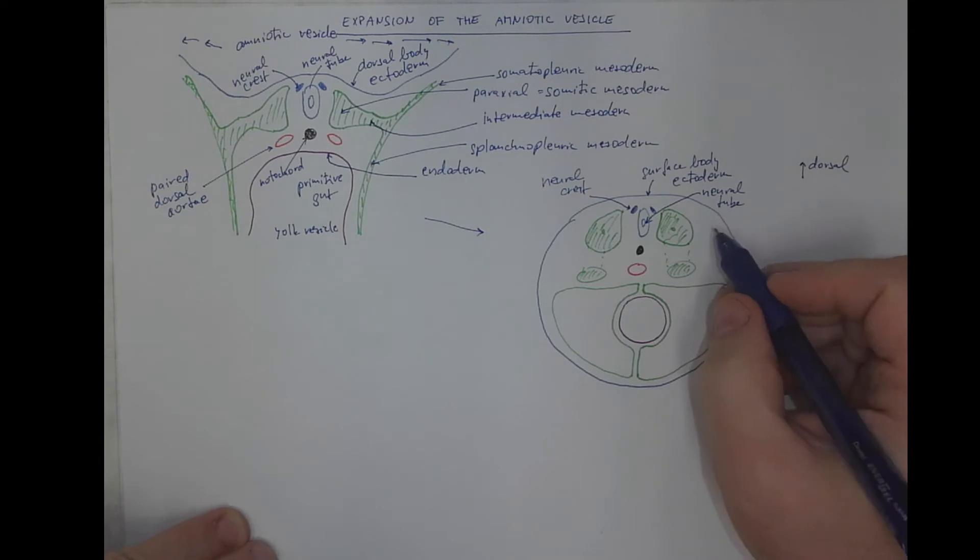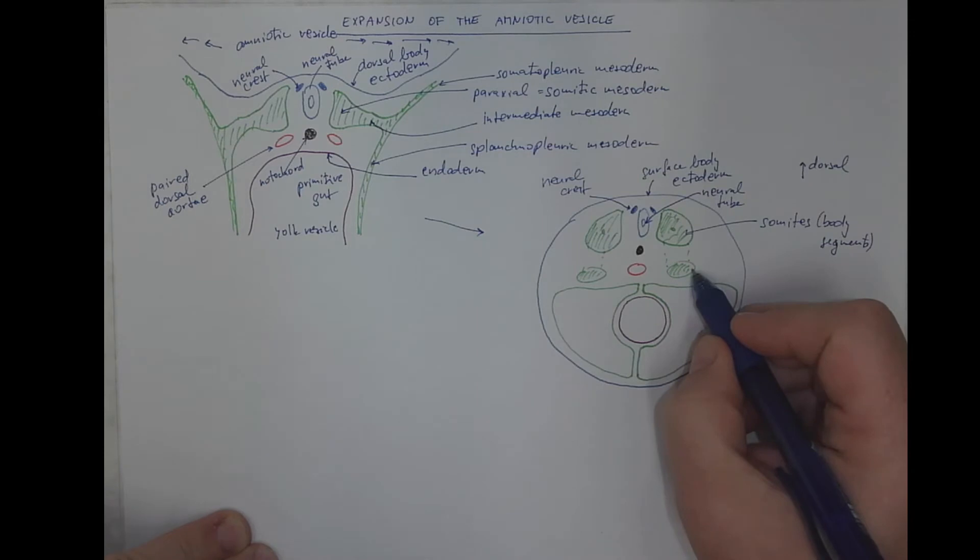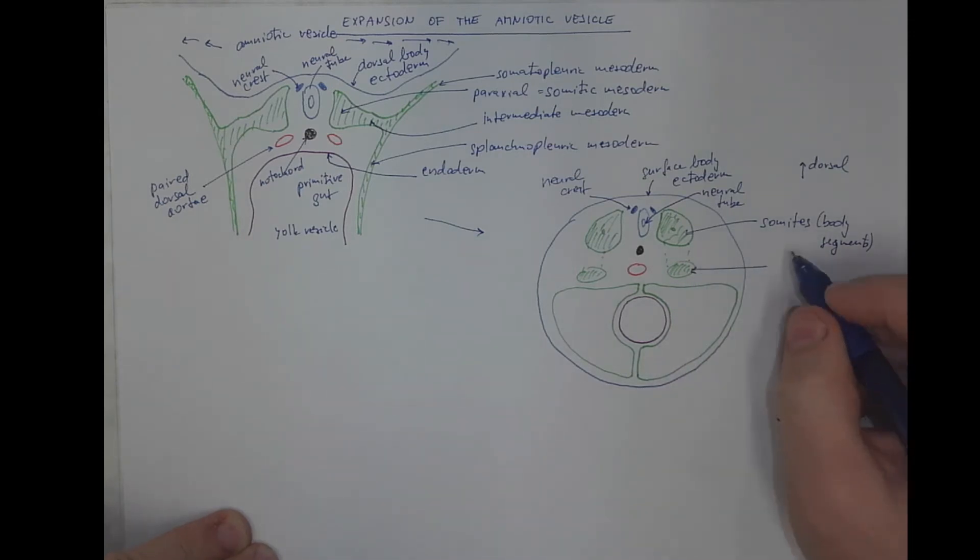The somatic mesoderm, or the somites, the body segments. Here we got the intermediate mesoderm, also called nephrogenic mesoderm, that will contribute to the formation of mesonephros and the final kidney.